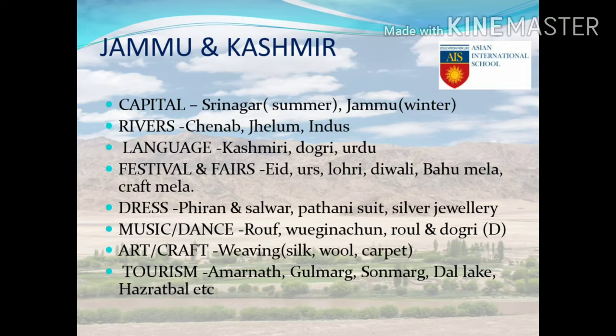Let us see what Jammu and Kashmir has to show us. It has two capitals: the summer capital is Srinagar and the winter capital is Jammu. Jhelum, Chenab and Indus are the main rivers. The languages spoken in Jammu and Kashmir are Kashmiri, Dogri, Urdu, Hindi, etc. Eid, Urz, Lohri, Diwali, Bahumela and Craftmela are the important festivals and fairs of the state.